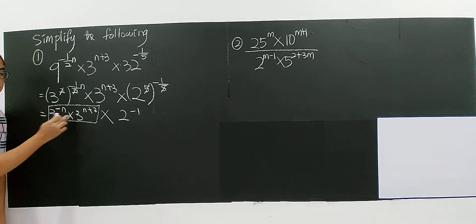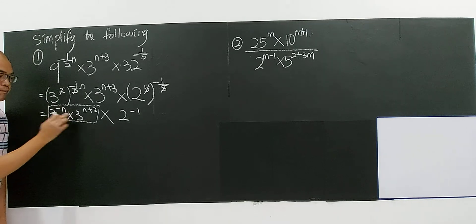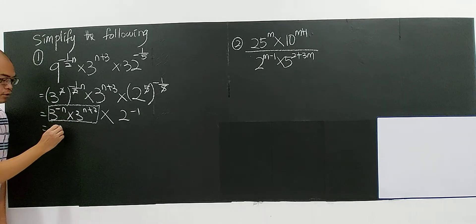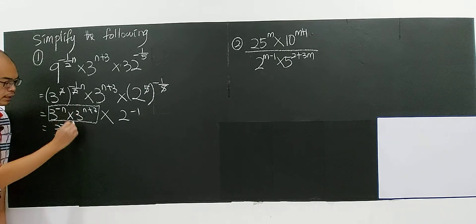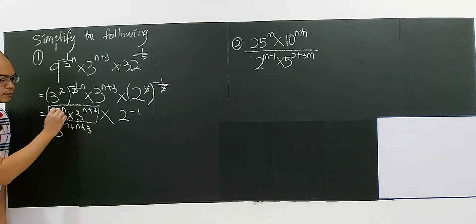So now it's this part here, which you have the same base. Only if you have the same base, you can add up the index. You must remember the N, negative N plus 3 plus N plus 3. Why you can add the index? Because it's multiply.